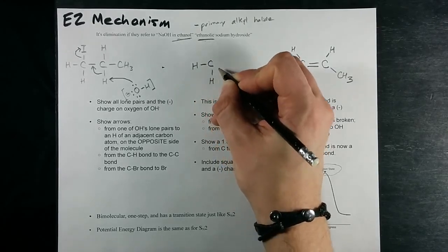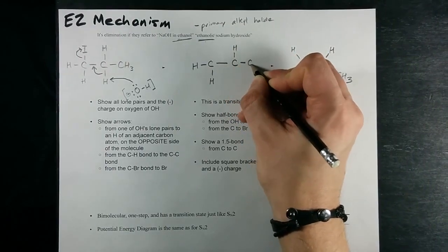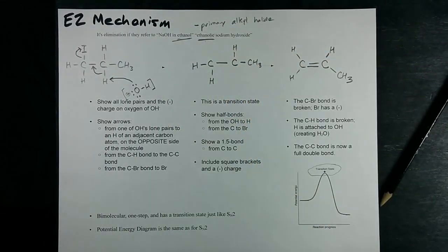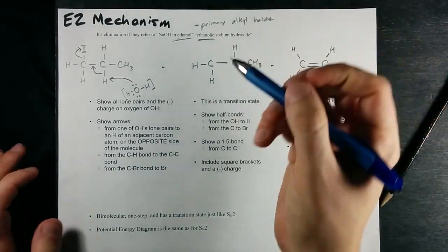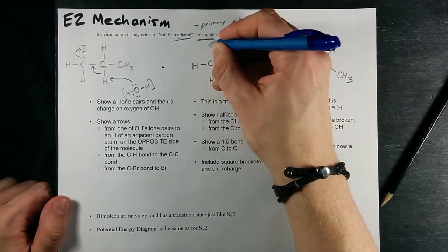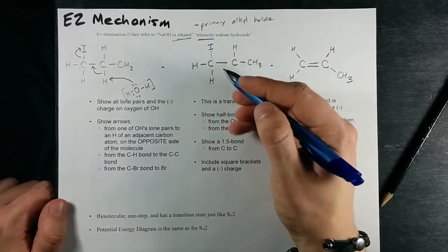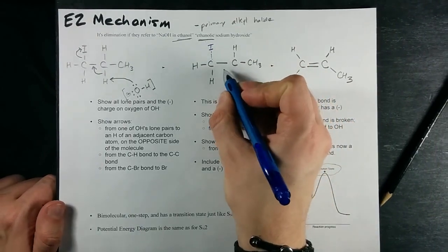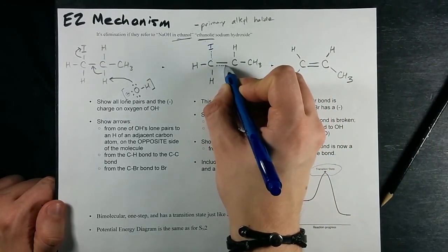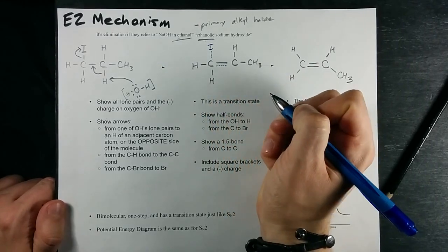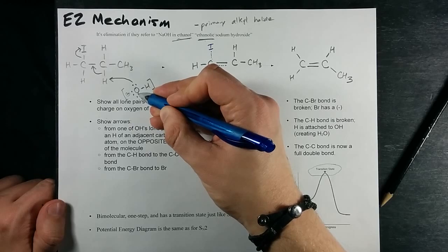I'm currently drawing all the bonds that do not change. These guys are not affected by the reaction itself. I'm just going to get another color pen here to show you what's going on. The iodine is falling off. I'm going to show him as a half-bond dotted line. This single bond is becoming a double bond, so I'm going to show him as a one-and-a-half bond.